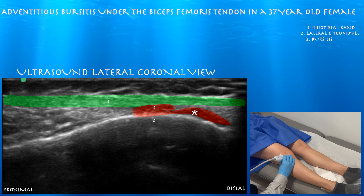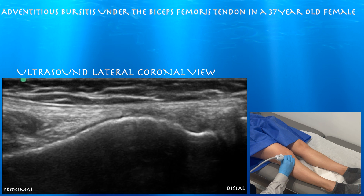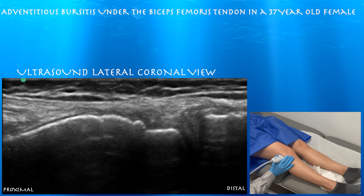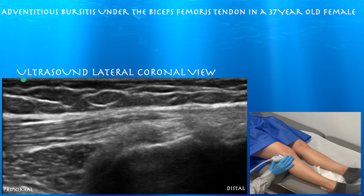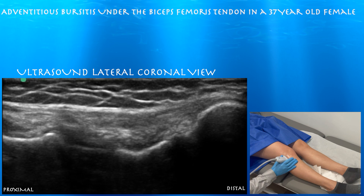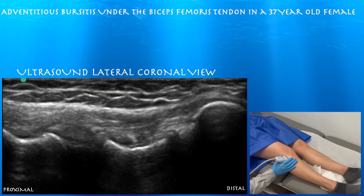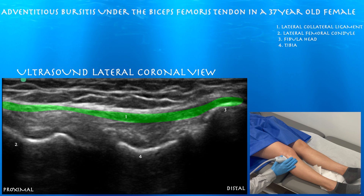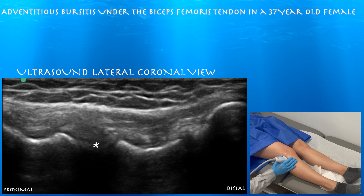Here you can appreciate a little bit of bursitis underneath the ITB band. This is a pretty normal view. You can look at the lateral collateral ligament, which is a long, kind of lax ligament going from the lateral epicondyle all the way down towards the fibula head. You can see the joint line here — looks like she has a good joint space.